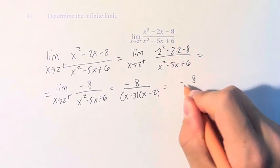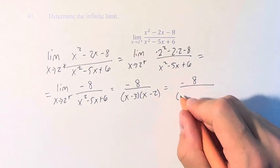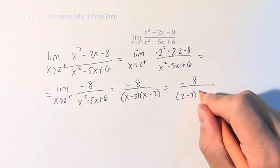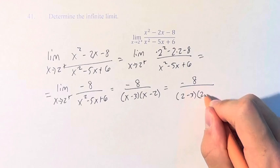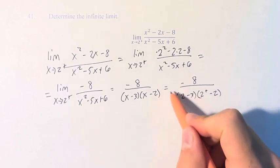And we plug in 2 from the right, 2 minus 3, we can just plug in, and then the trouble is that if we plug in 2 directly here, we're just going to get 0. And that's where the 0 comes in that we can't divide by.